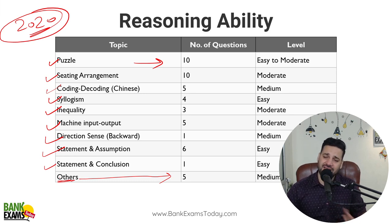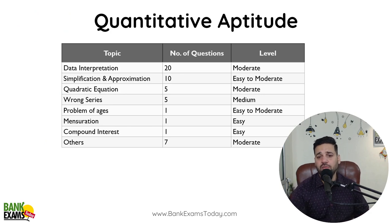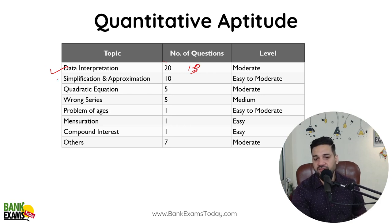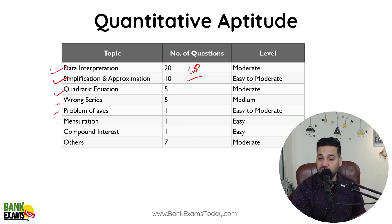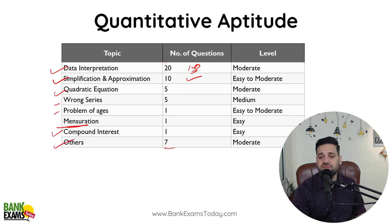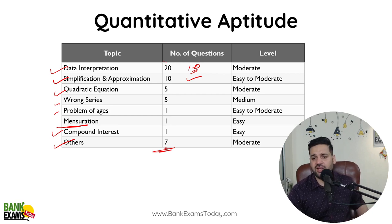Quantitative Aptitude was a little easy. In the quantitative aptitude section, data interpretation — out of 20, 10 questions were very easy. Simplification and approximation — again this is very easy, it's always easy. Quadratic equation, wrong series, problems of ages. There was a mensuration question, which is really a unique thing as it doesn't usually appear in these exams. There were questions from compound interest, and seven questions from other topics such as time and work, time speed and distance, ratios, mixtures and allegation. Data interpretation was most important here.